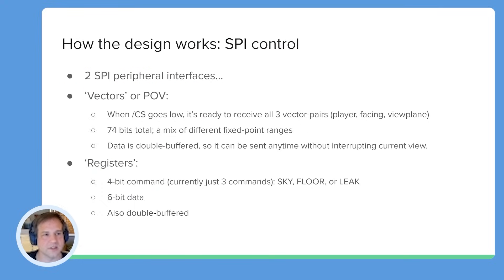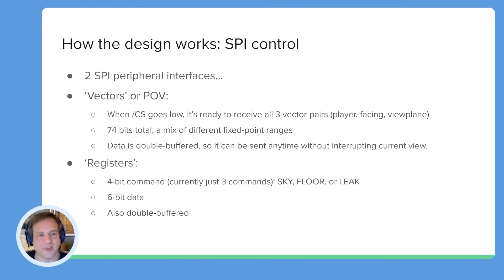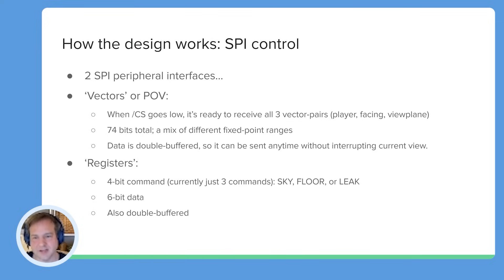The only other main part is the SPI control, which has two interfaces — one for updating the point of view. When the chip select is asserted, it's ready for a stream of 74 bits, which is a packing of all the different ranges of the fixed-point numbers it needs for those vectors, to make it as efficient on area as possible. That data is double buffered, meaning that on condition that at least one entire stream of 74 bits is completed and the next frame is ready to start, it will use that data. Otherwise, it keeps waiting and rendering the existing view. This means the host controller doesn't need to care at all about timing — it can just send data whenever it wants, and the design will use it if the data is good, avoiding the risk of corrupting the display halfway through.